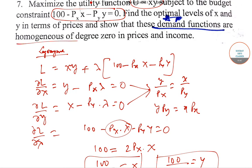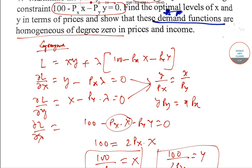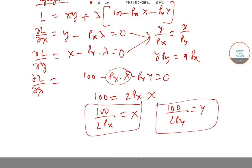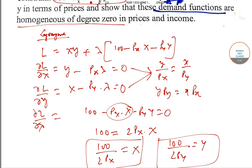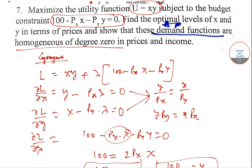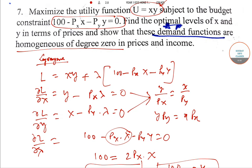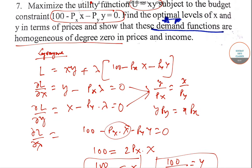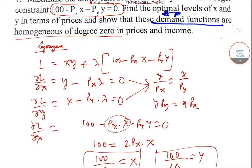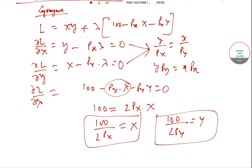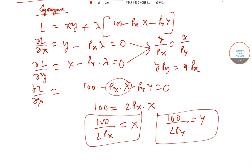Now they have asked you to prove whether they are homogeneous of degree 0 with respect to prices and income. Answer is yes, they are. So you can see the power is 1. If this is lambda changing by lambda, the optimal levels are X and Y in terms of prices that we have shown. And so the demand functions are homogeneous of degree 0 in terms of prices and income. The budget line also you can show.